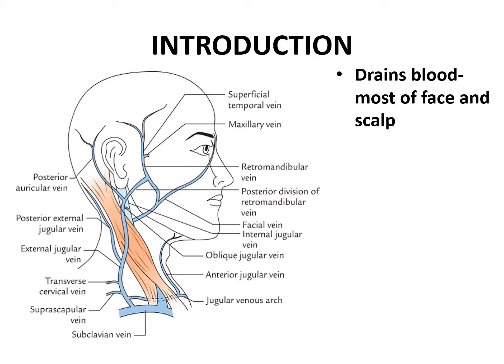To introduce the external jugular vein, this vein drains blood from most of the face and the scalp.